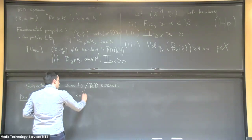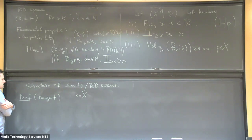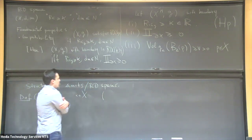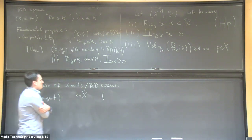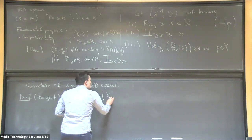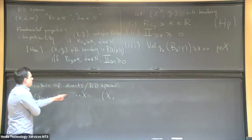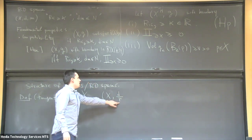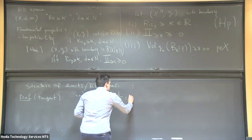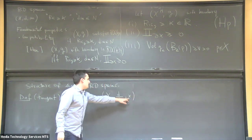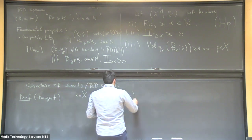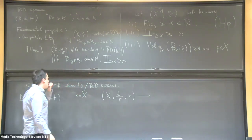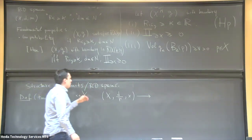We consider a point x in our space X, and we take limits of the following sequence of spaces given by scaling down the distance around the point x by a factor r going to 0, keeping the point x fixed. Applying the Gromov compactness theorem or the compactness of RCD(K,N) spaces, we get limit points — these are the tangent cones at x.